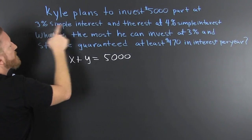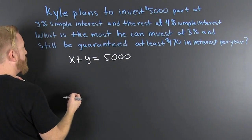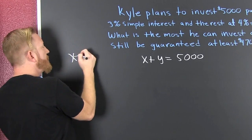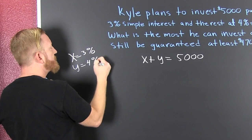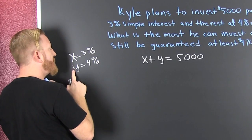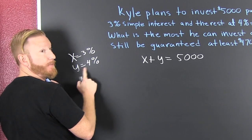What else? He wants to do 3% simple interest and 4% simple interest. Let's let X equal 3% and Y equal 4%. When I'm saying that, I'm not actually saying that those values are going to be those.